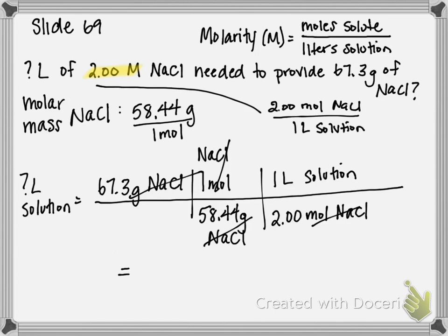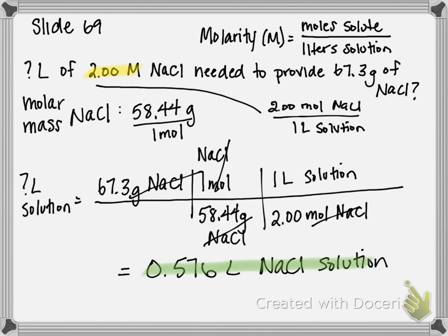Now to get the answer, it's just multiplying across and dividing my numbers on the bottom, and I get that you need 0.576 liters of sodium chloride solution to provide that mass. And that is how you solve another type of molarity calculation.